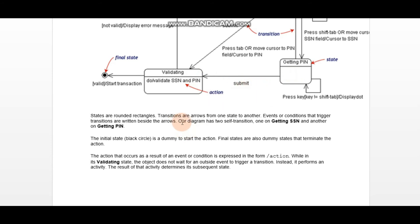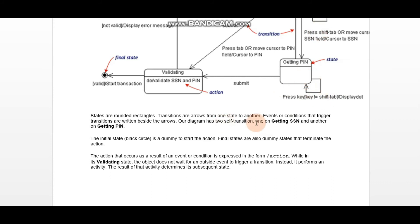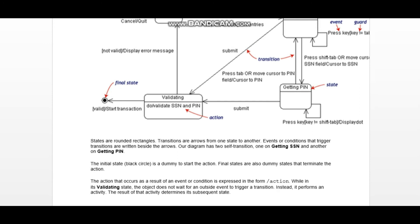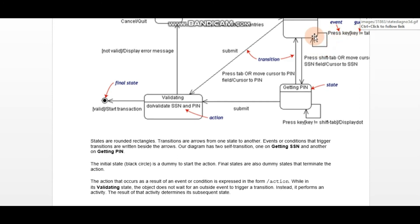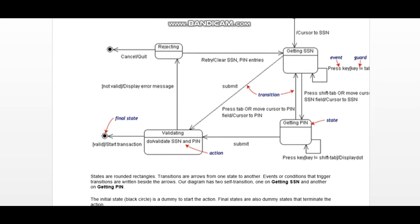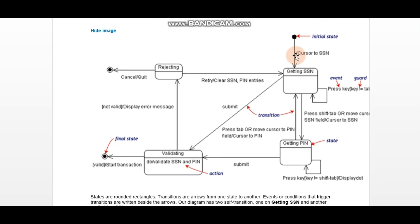Our diagram has two self-transitions: one at getting the social security number and one when collecting the PIN. The initial state is represented by a black circle, which is a dummy symbol used to start the action.